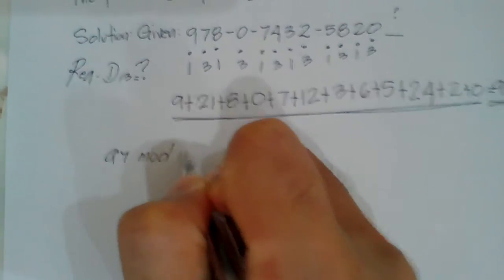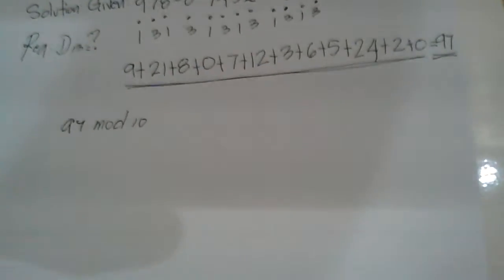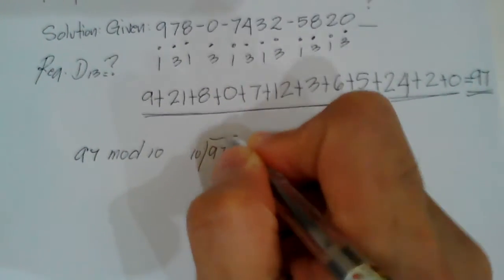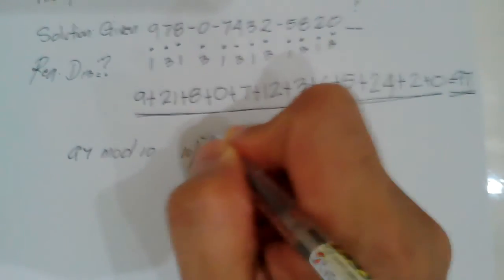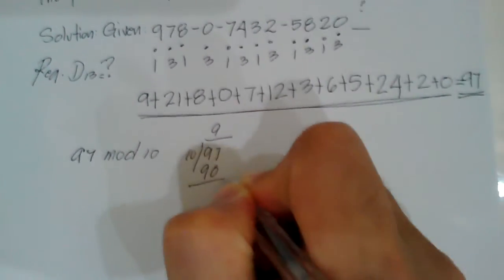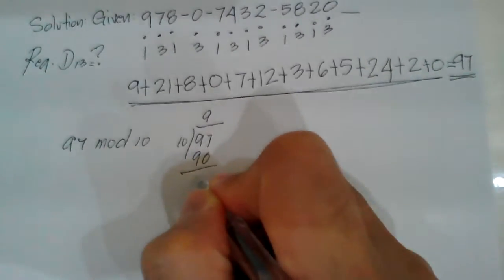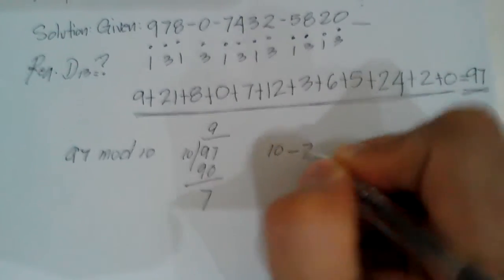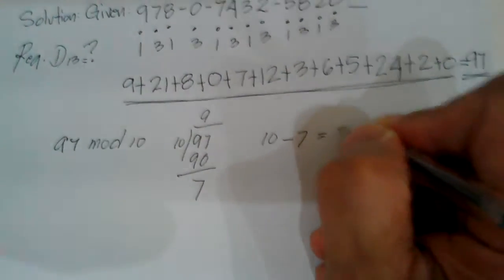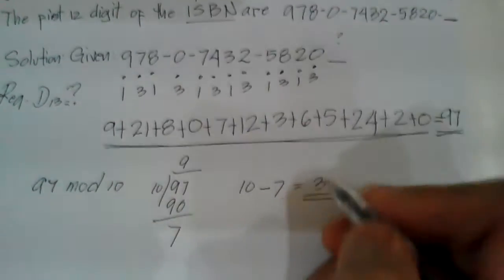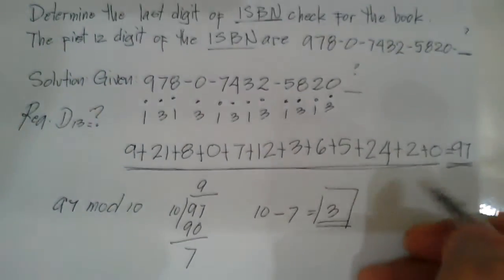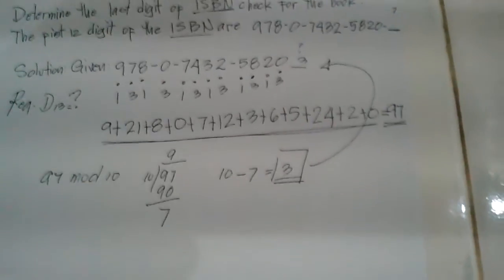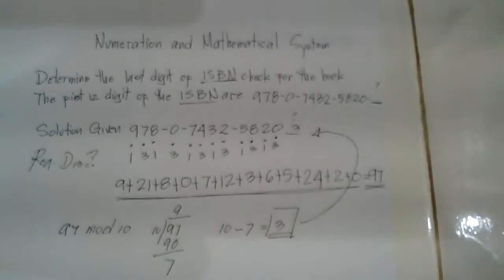Now we take 97 modulo 10. So 97 divided by 10: 9 times 10 is 90, and 97 minus 90 equals 7. Then 10 minus 7 equals 3. So the last check digit is 3.